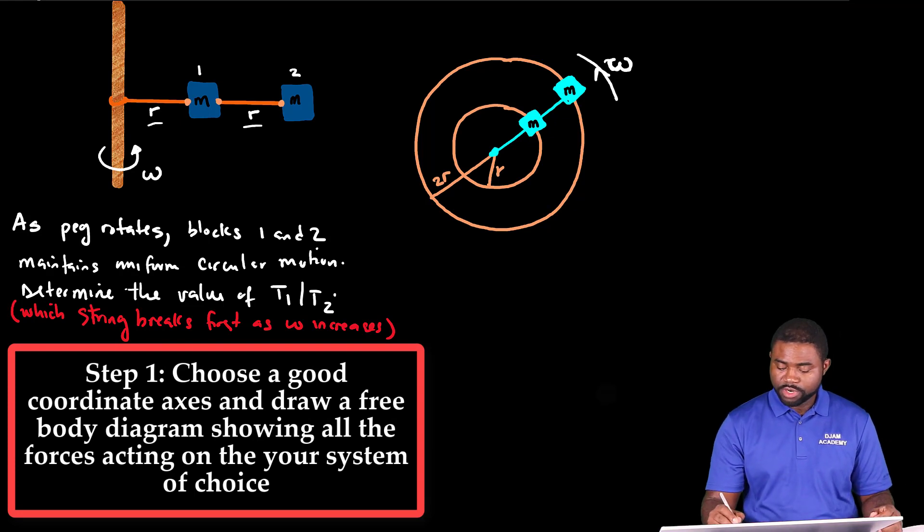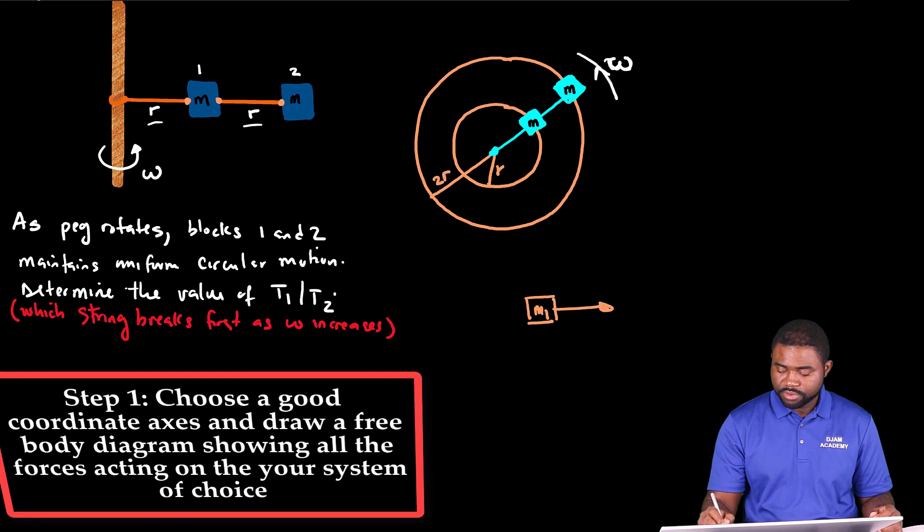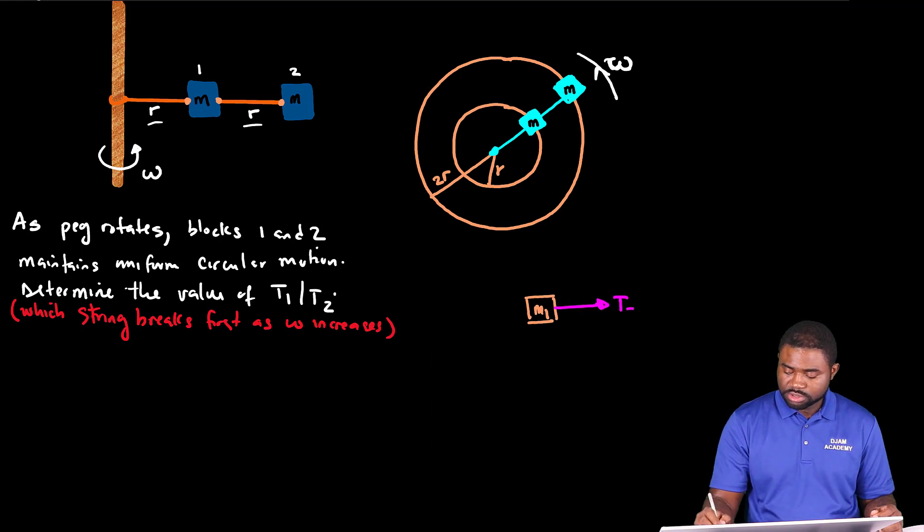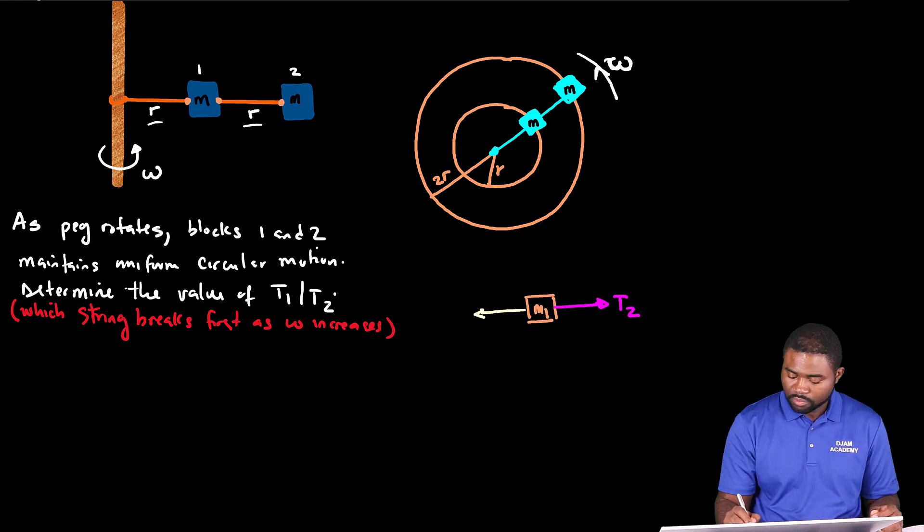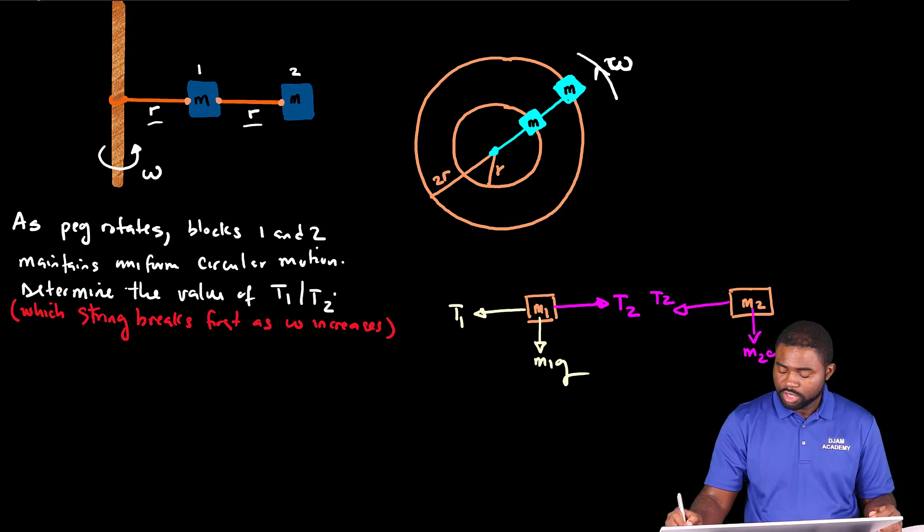So for block one, I'm going to just represent block one. We have here, this is T2. This is T1, M1G. For block two, T2, M2G.